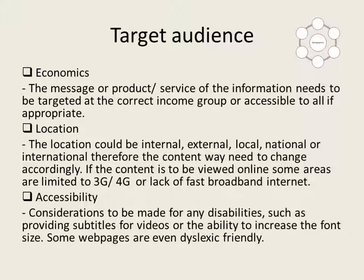The next three sections for target audience are economics, location and accessibility. For economics, the message or product needs to be targeted at the correct income group or accessible to all if appropriate. For location, the location could be internal, external, local, national or international, and the content may need to change accordingly. If the content is to be viewed online, there might be a limit on their connection — for example, they might not have 5G, and that might be due to the speed of the internet as well.